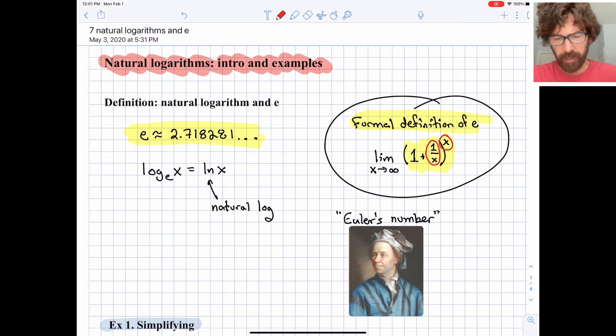And those competing forces end up kind of landing on e. They will equal roughly 2.71828. And you can try this for yourself. Try plugging in a large number, a billion, a trillion, into that expression, 1 plus 1 over x, all raised to the x, and see what you get.